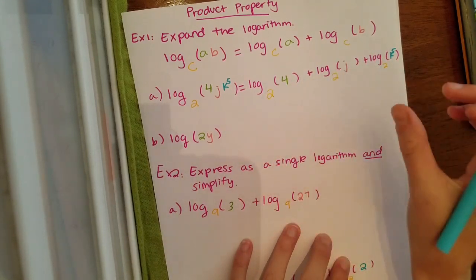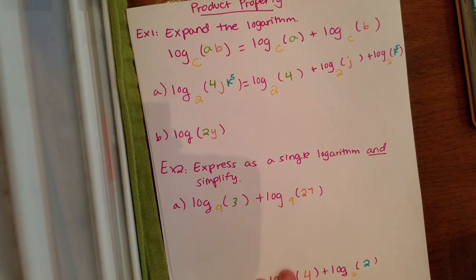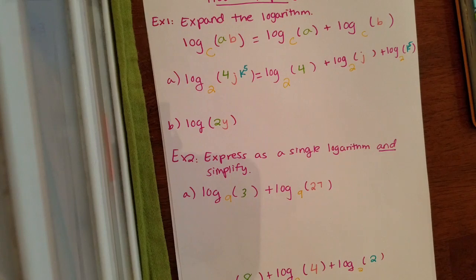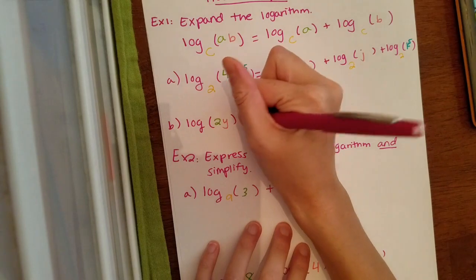And you put each piece into their own log. And don't forget, you have to use the same base each time. So same thing holds for part B. If you want to try part B on your own, it's pretty much the same thing. So if you want to try it, fast forward to the end, see if you get the right answer.